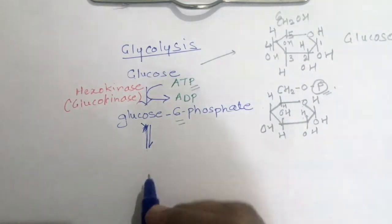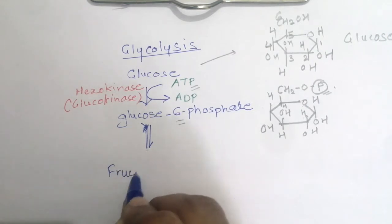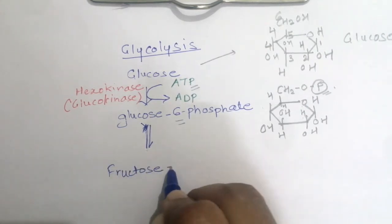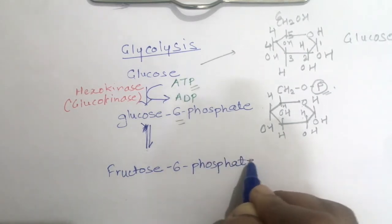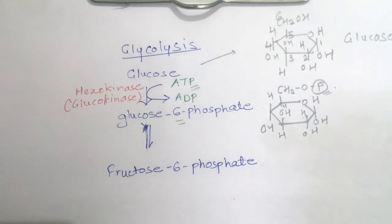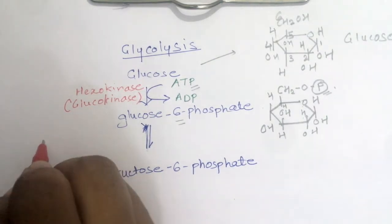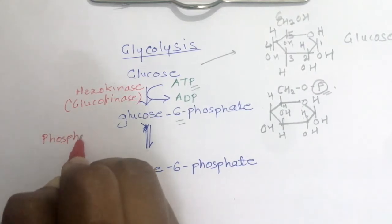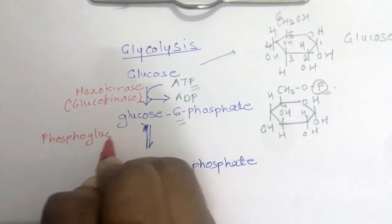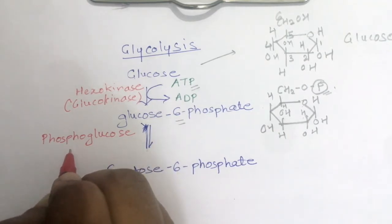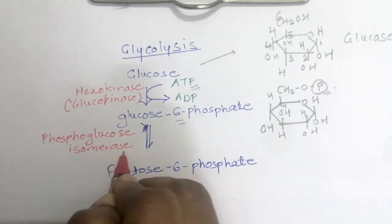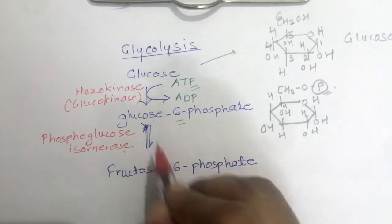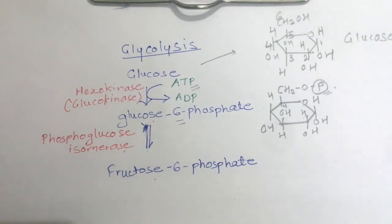Now glucose-6-phosphate is converted to fructose-6-phosphate. Fructose also has 6 carbons in it. There is no addition of any new atoms or molecules into it. It is just an isomerization reaction, and that takes place because of the enzyme phosphoglucose isomerase.